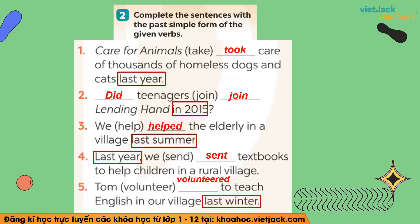Number 5: dấu hiệu nhận biết là last winter (mùa đông năm trước). Từ volunteer là động từ có quy tắc: Tom volunteered to teach English in our village last winter — Tom tình nguyện dạy tiếng Anh ở làng của chúng tôi vào mùa đông năm trước. Thế thì bây giờ khi mà các bạn làm bất cứ bài tập chia động từ nào, các bạn sẽ luôn luôn gạch chân những từ chỉ thời gian trước để xác định xem đây là thì gì, sau đó hẳn chia — như thế thì sẽ không bao giờ sai nhé.